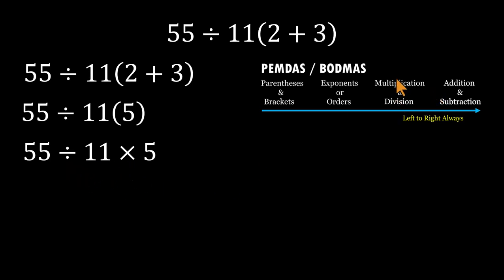And when equals show up side by side, we don't guess. We just follow the order from left to right. So starting at the left, 55 divided by 11 gives us 5. Then 5 multiplied by 5 equals 25.